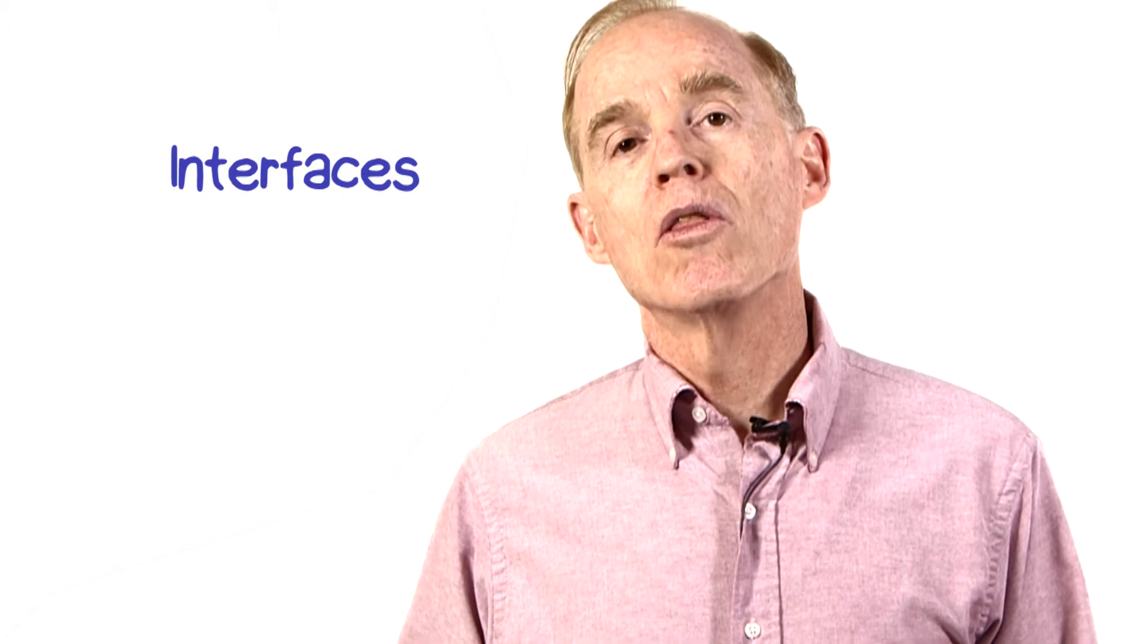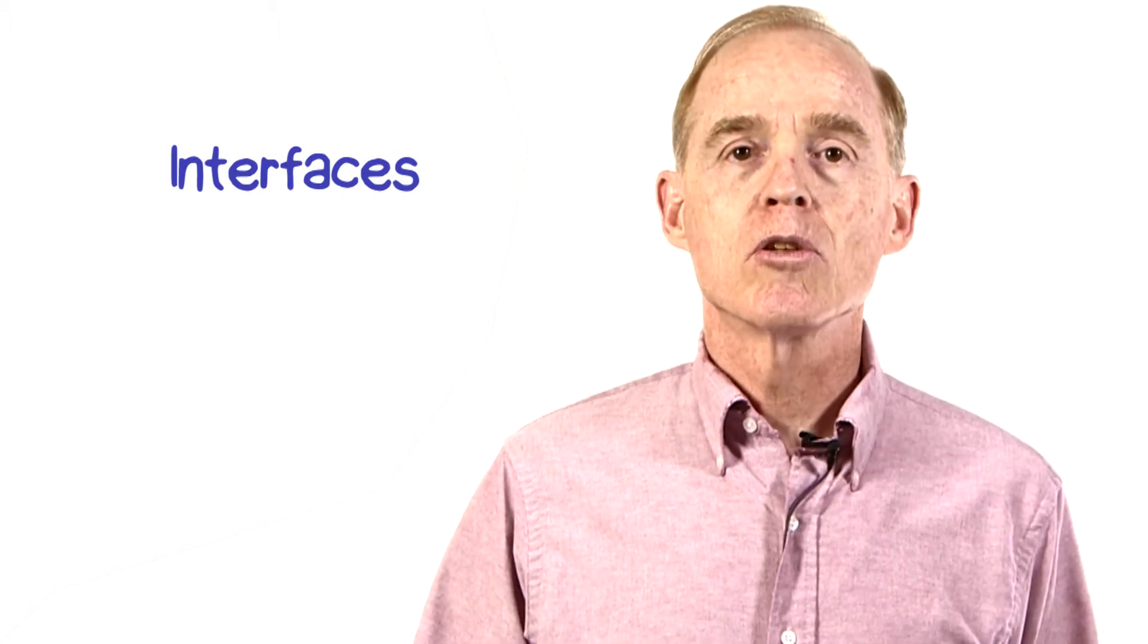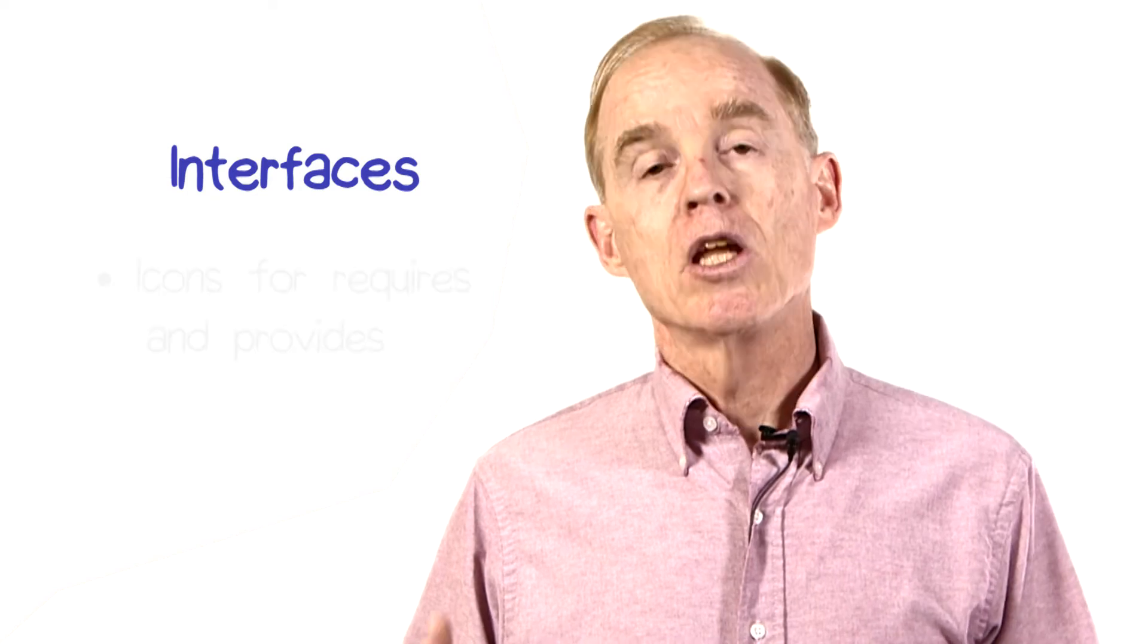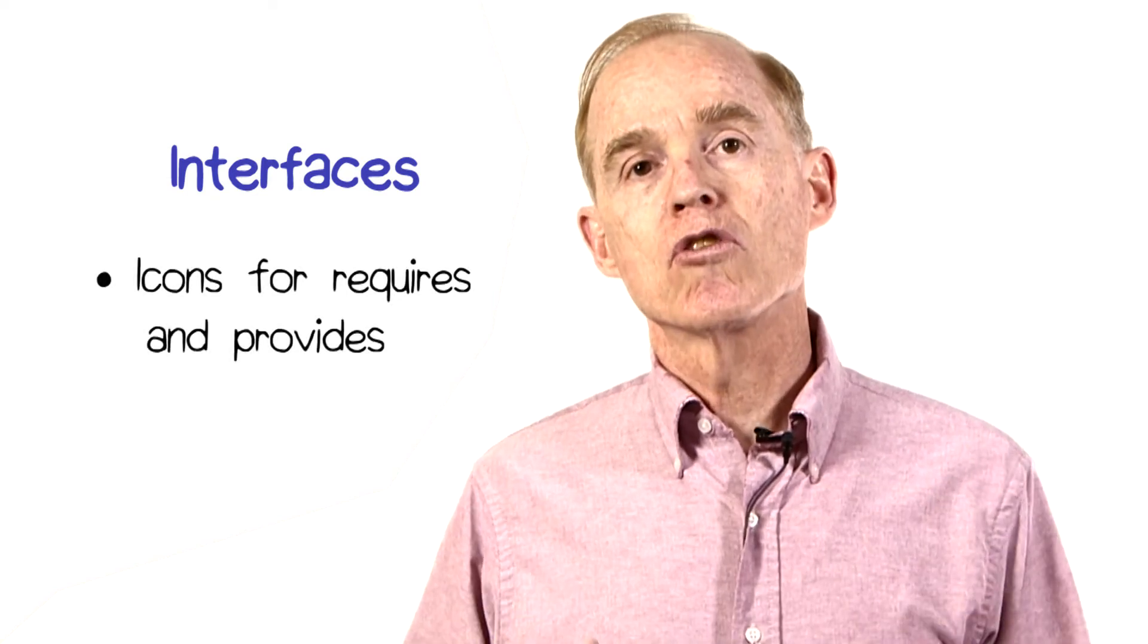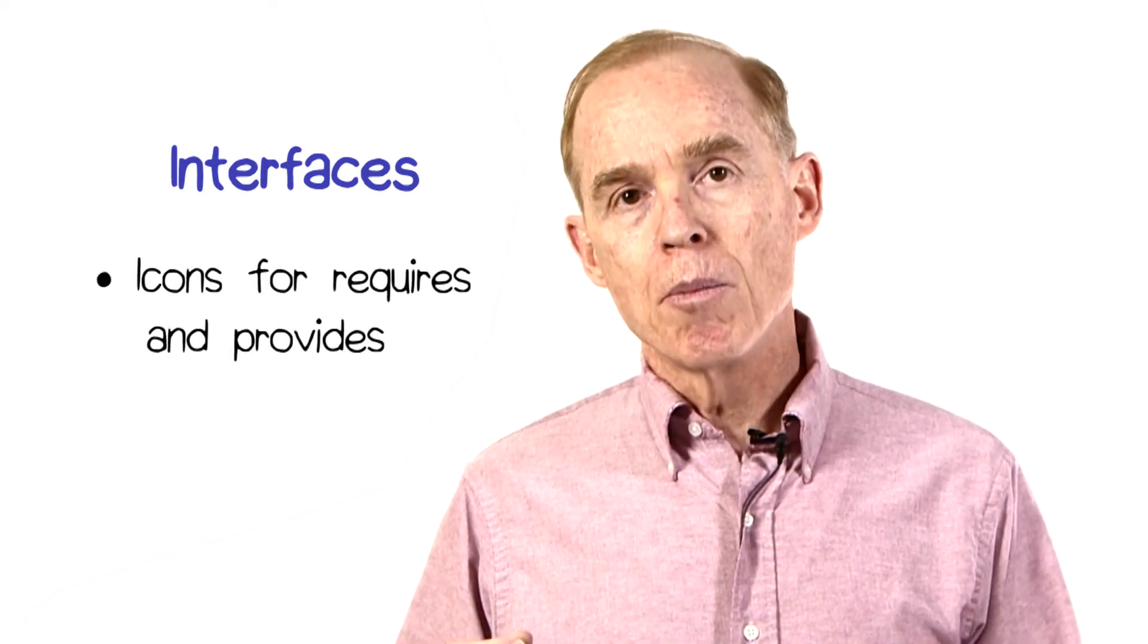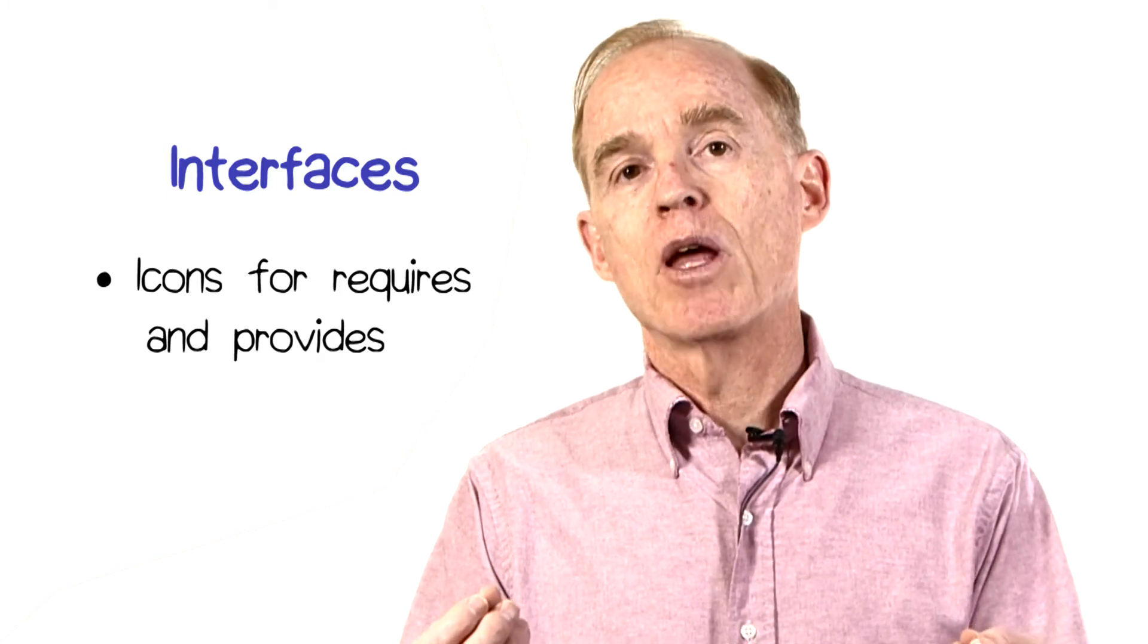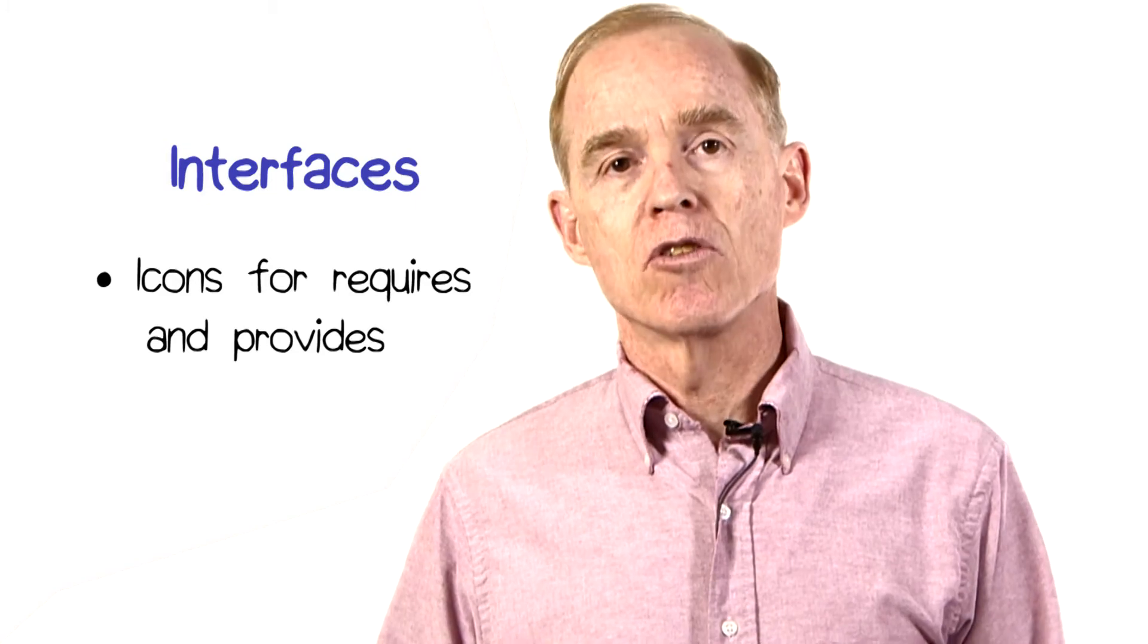If you're familiar with an object-oriented language like Java, you know that you can express in your program a type by using the interface construct within Java. In UML, you can also have interfaces. And in those interface descriptions, you typically describe what that interface provides to the rest of the system and what it requires from the rest of the system.